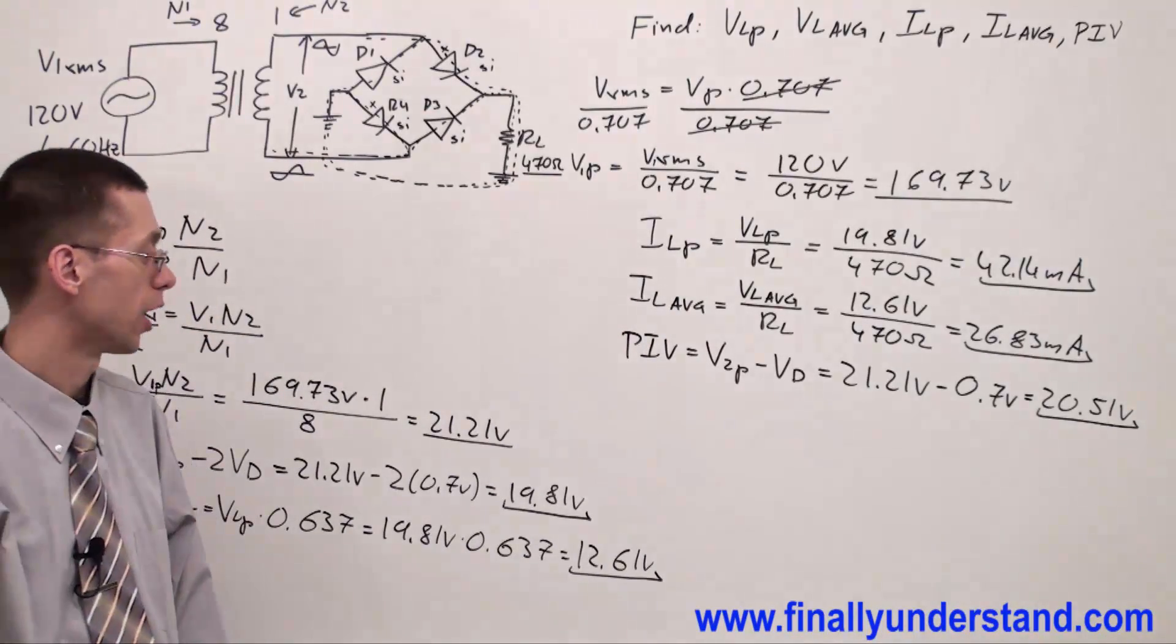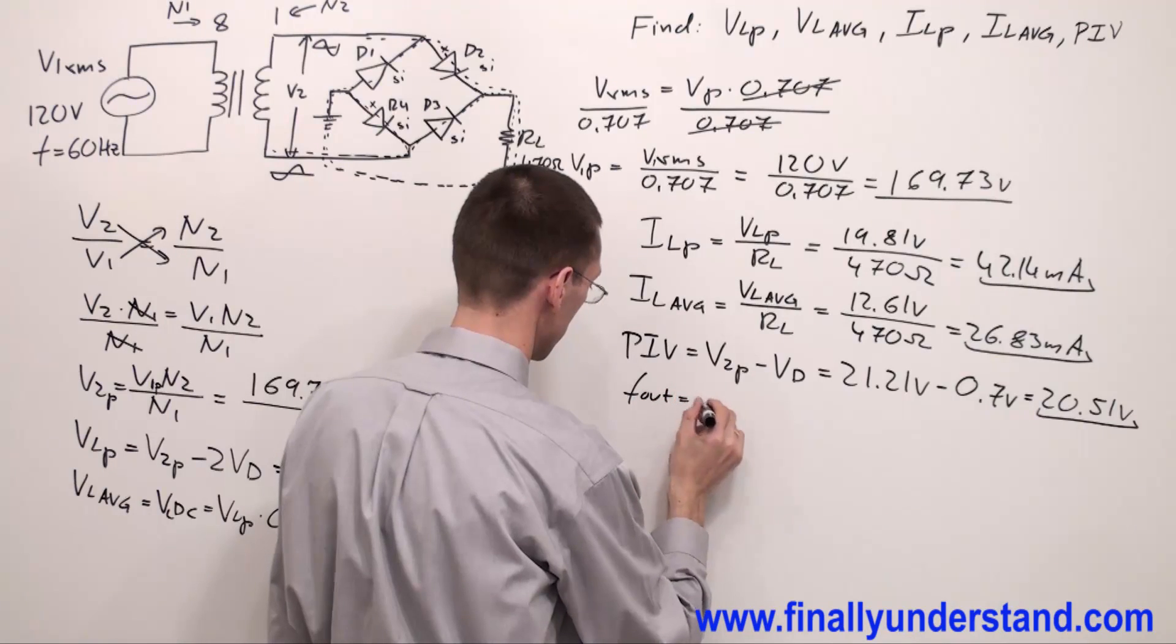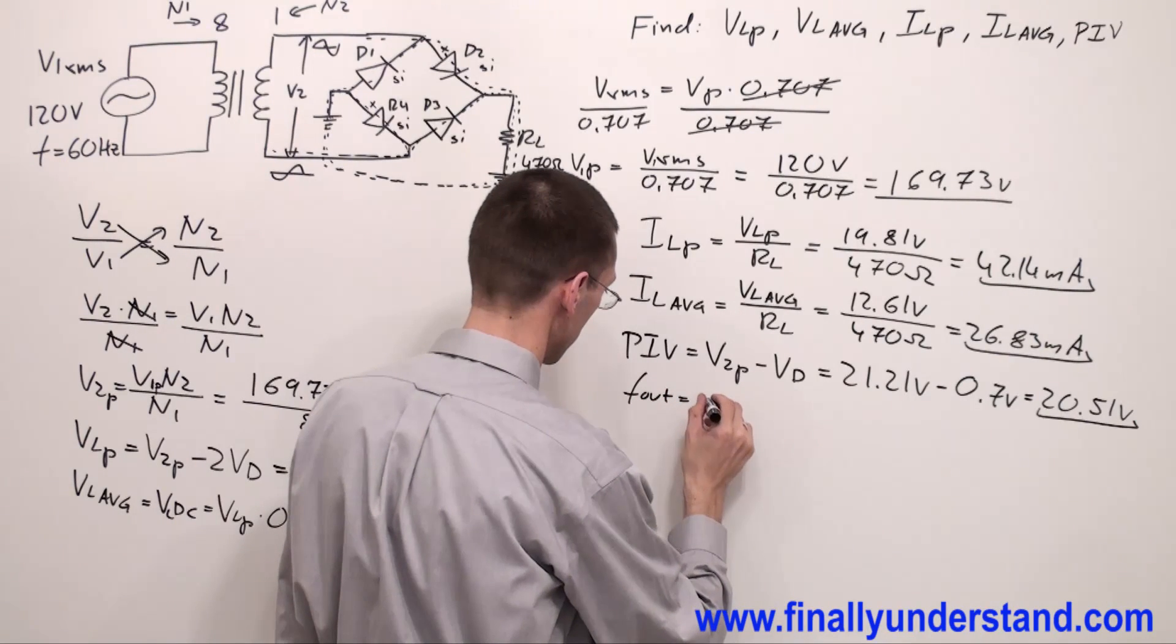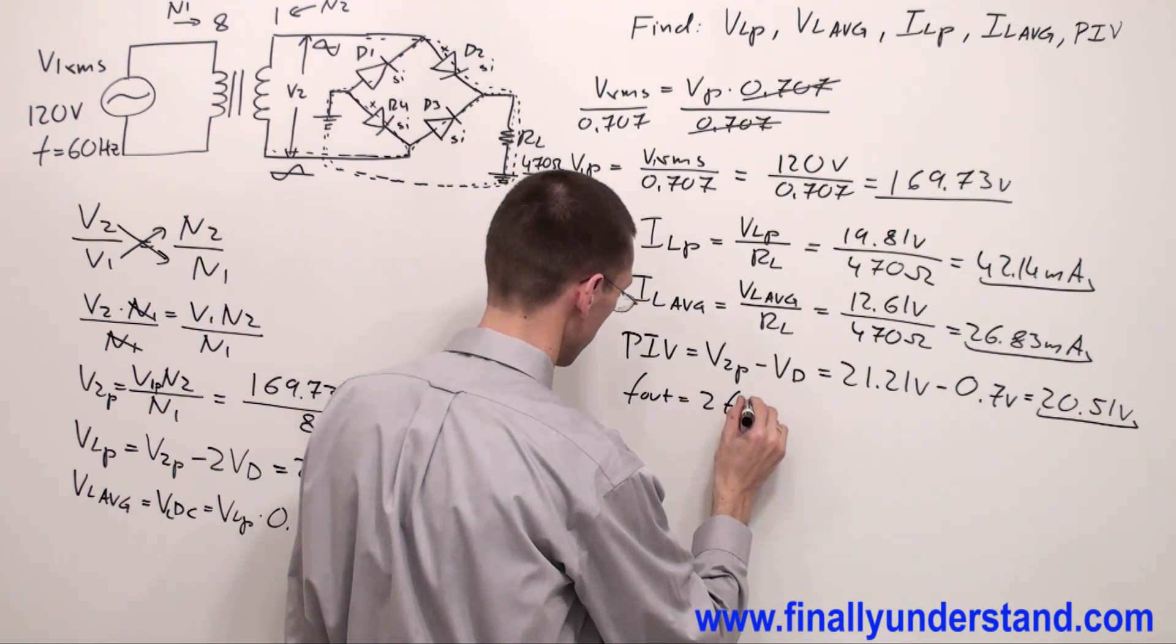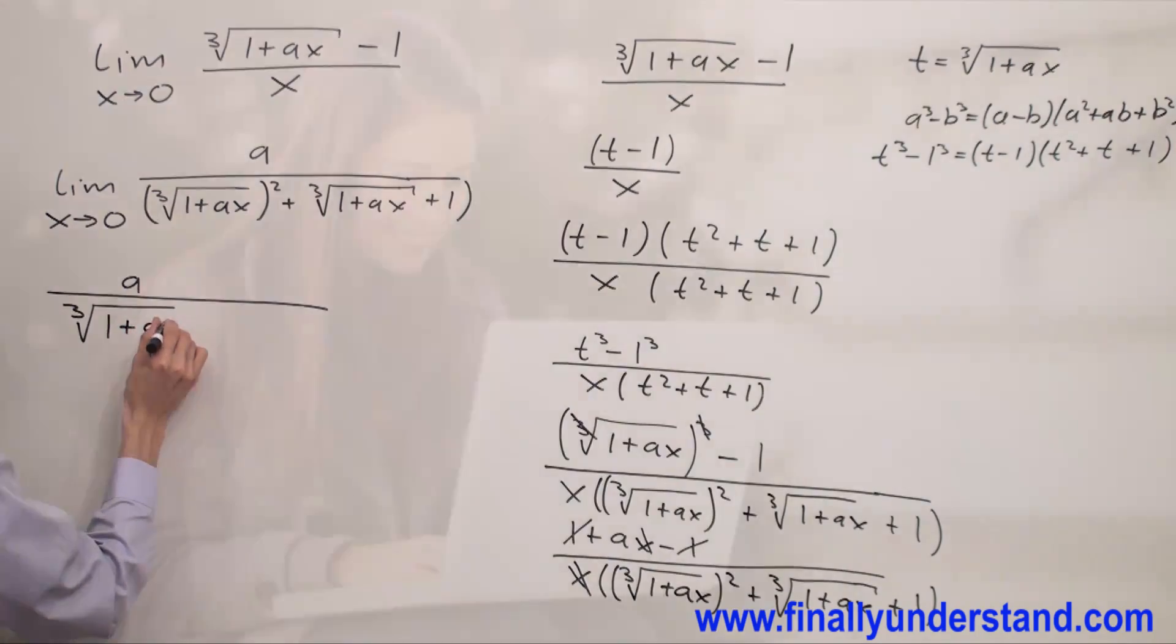If you want to find output frequency, F out is equal to 2 times FE and QB of 1 plus 8.